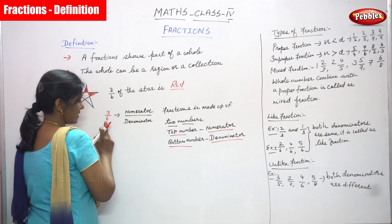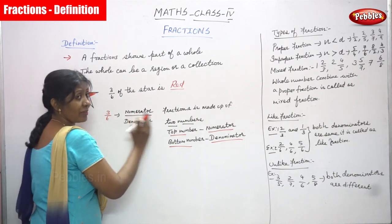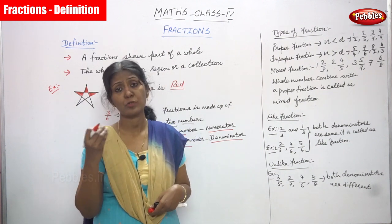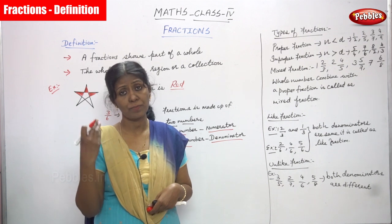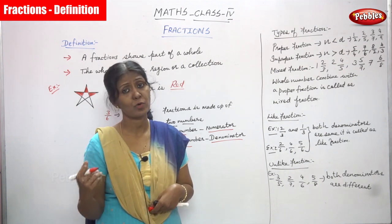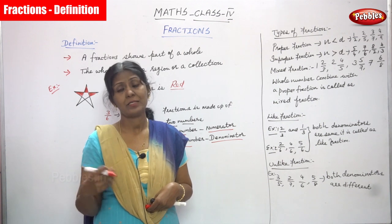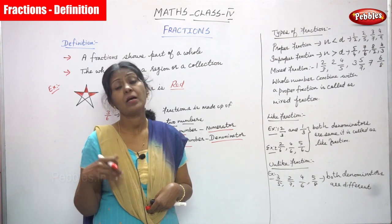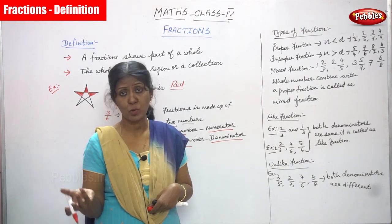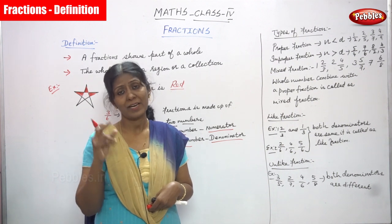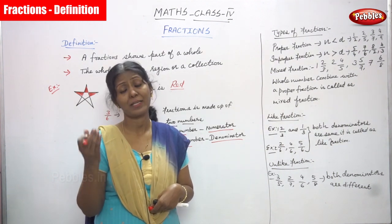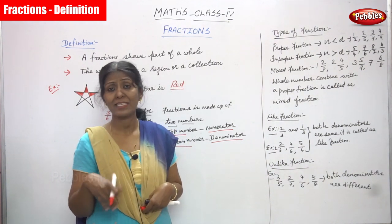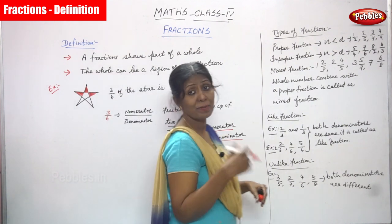The top number is always called the numerator and the bottom number is always called the denominator. So the fraction is made up of two numbers — one is a numerator, the other is a denominator. Whether the fraction is four by five, two by seven, or five by eight, the top number is always the numerator and the bottom number is always the denominator. Don't forget this concept — it's a very basic concept.